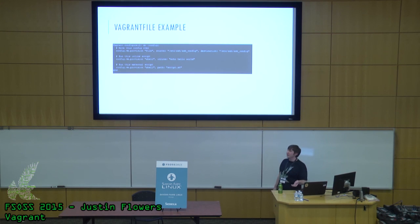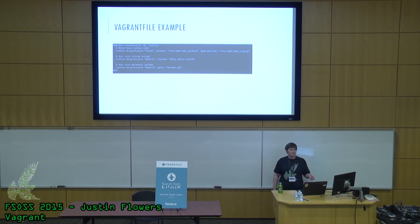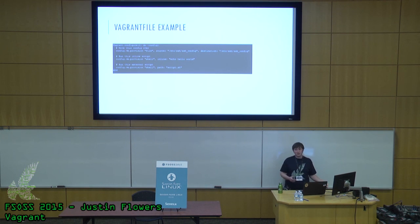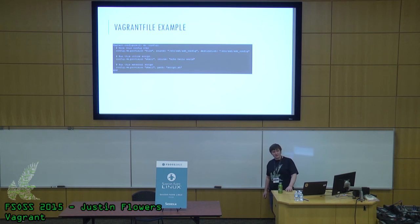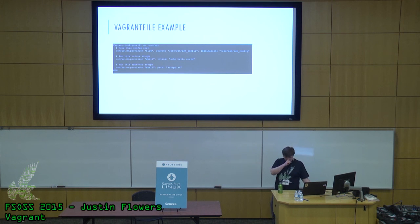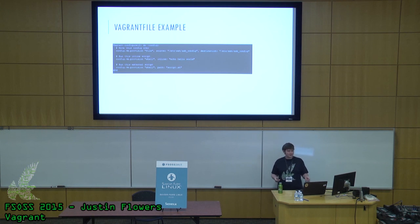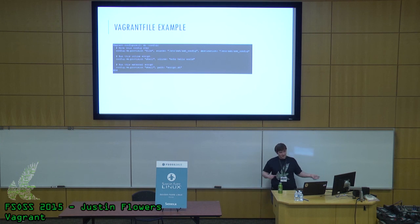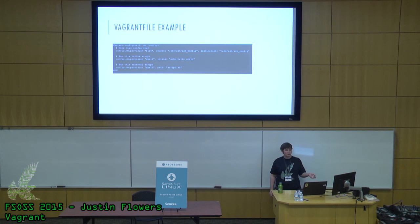Here are examples of provisioning in a Vagrantfile. There are three main ways: file, inline scripts, and external scripts. File allows you to simply copy a file from one location to another — for example, copying your SSH config on the host to the SSH config on the guest. For inline, you define the script inside the Ruby file — in this case, it would just echo hello world. External provisioning allows you to make a script on the outside and point your Vagrant box towards it — after it connects, it will run script.sh.